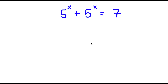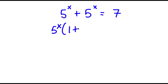So in this problem, I have phi to the power of x plus phi to the power of x is equal to 7. To start, I'm going to factor out phi to the power of x from my left-hand side. So now I have phi to the power of x times 1 plus 1 is equal to 7.